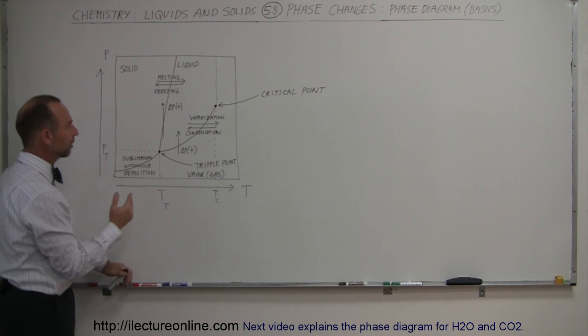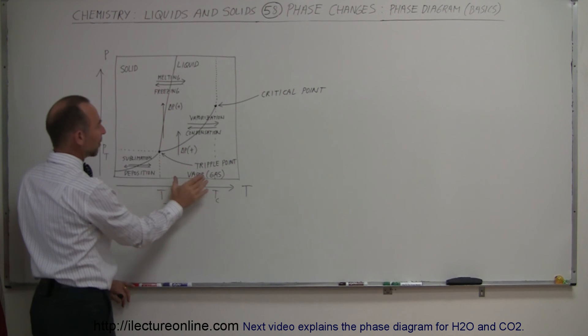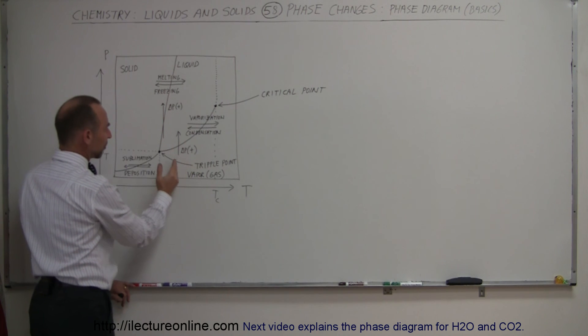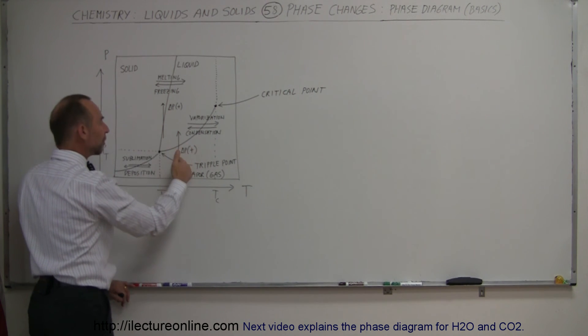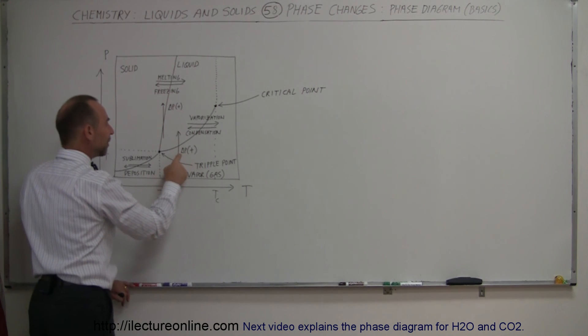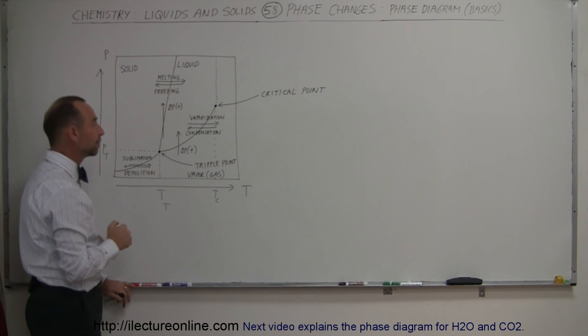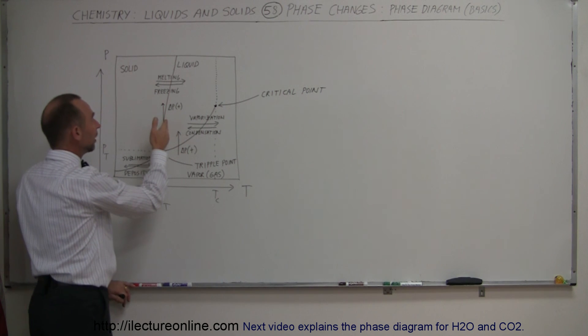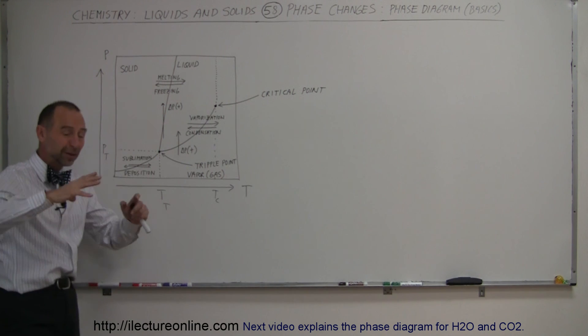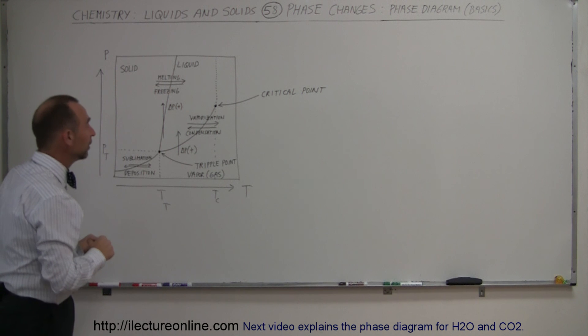Now also, another thing you can look at is on this diagram. Let's say we have a vapor at a particular temperature and you keep increasing the pressure. Eventually, you will compress a vapor into a liquid when enough pressure is applied. Also, let's say you have a liquid and you apply enough pressure that can eventually turn into a solid. It can actually take a liquid under enough pressure and actually will solidify the liquid.